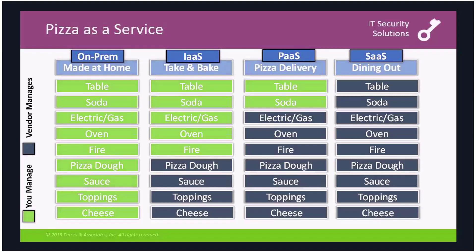The infrastructure as a service model is similar in that you're still managing a lot of the elements, but you've also moved a lot of the basic requirements off to a vendor. Similar to platform as a service, there are things like the application layer that you're responsible for, but even more things are passed off. And then finally, the SaaS model.